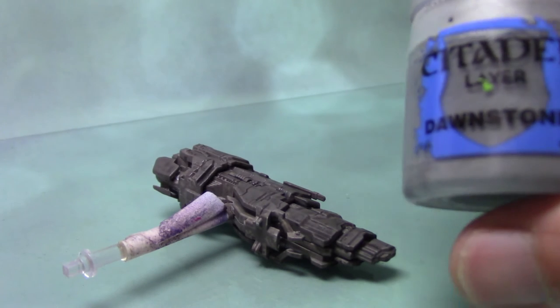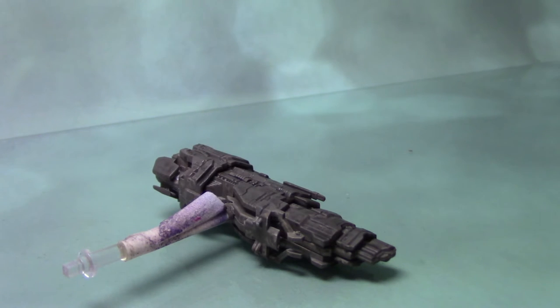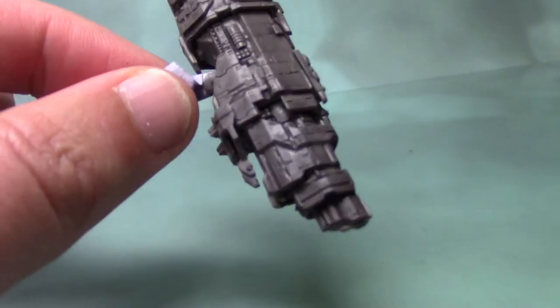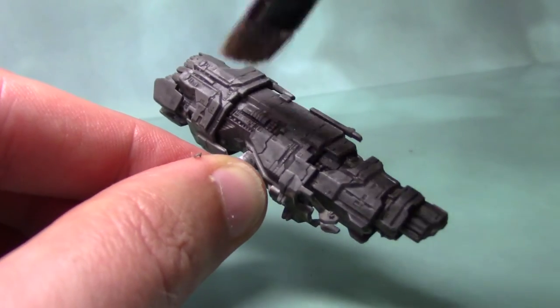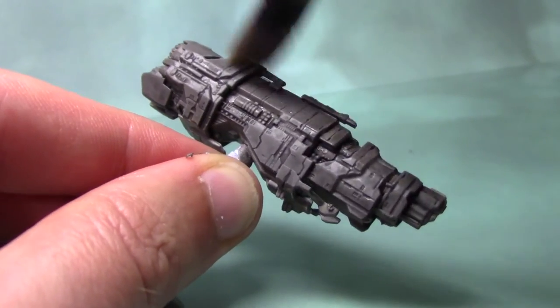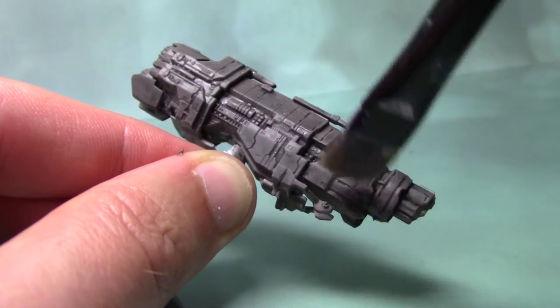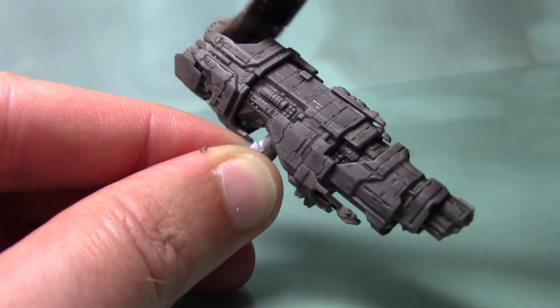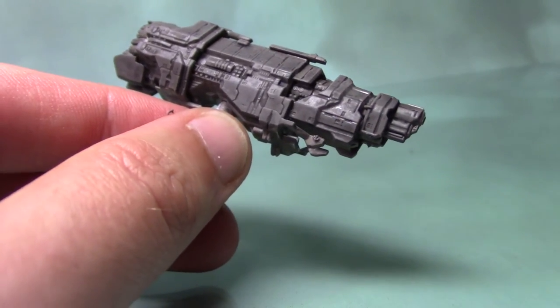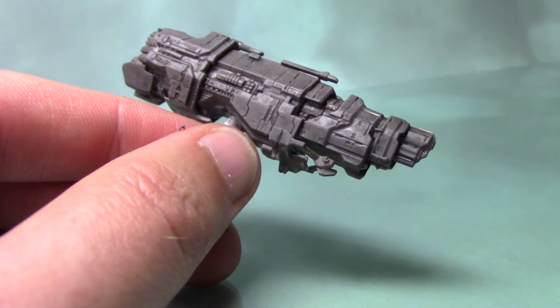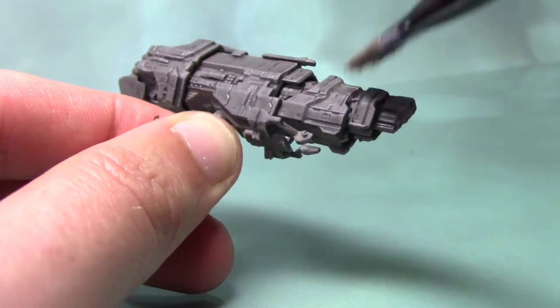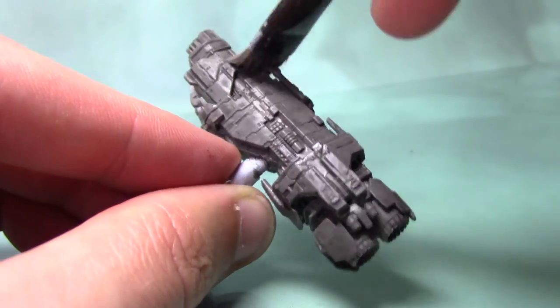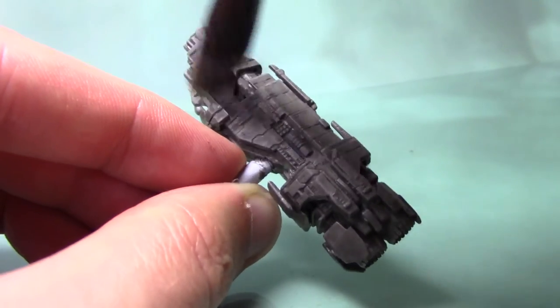I've gone around the whole ship, and now we'll do exactly the same with Dawnstone. Dry brush this on the same way—just a little bit on the brush, lightly running it over all these panel lines. As it's a lighter color, it will really start to show up better now. Just keep going around the whole ship with this to highlight all the panel lines. This is a very quick and easy way to highlight ships like this, rather than doing edge highlighting as we've done in previous Covenant videos.